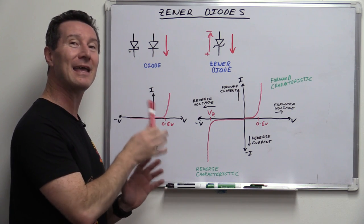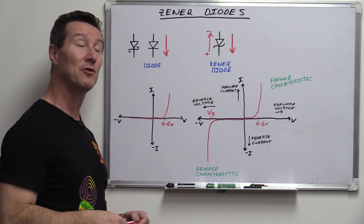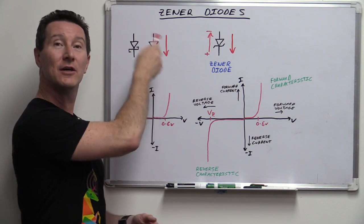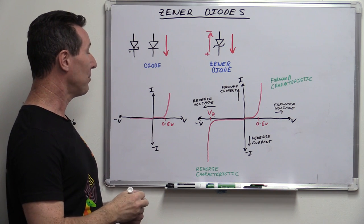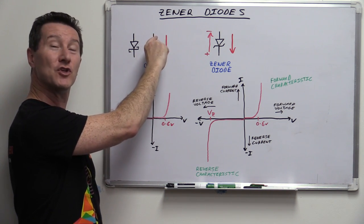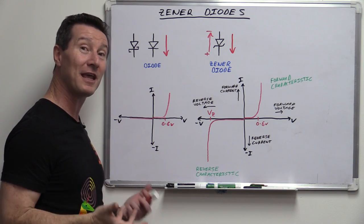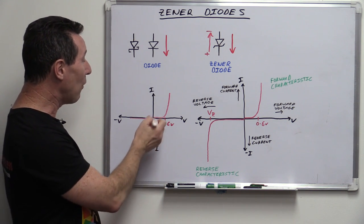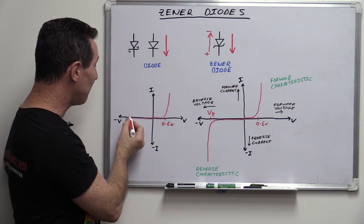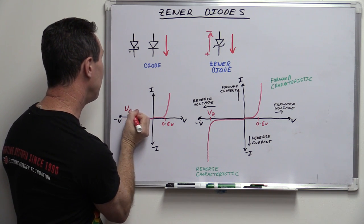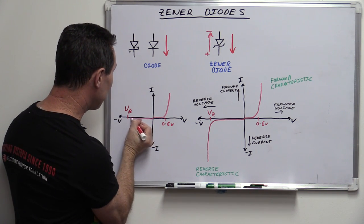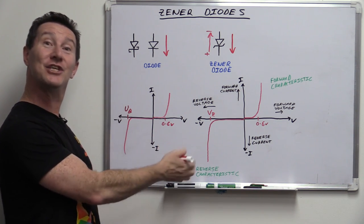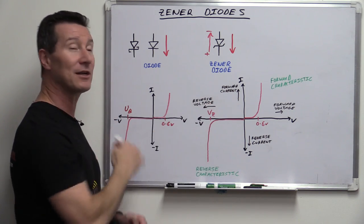I hinted before that regular diodes may have something a bit unusual too — they actually act like Zener diodes, kind of, and so do Schottky diodes. When you reverse the voltage on them, they don't allow current to flow — that's what you typically think of. But ultimately you get to a breakdown voltage, VB, and at that voltage it's actually going to do a very similar thing: it's going to break down, or what's called avalanche, in the other direction — very similar to a Zener diode.